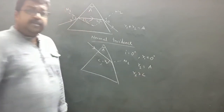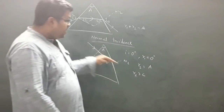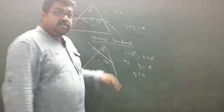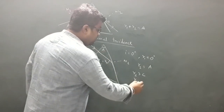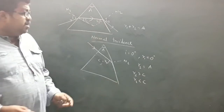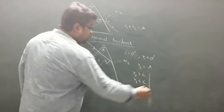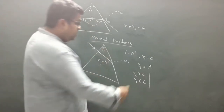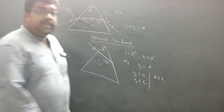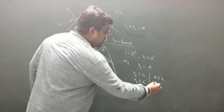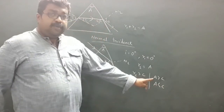The ray will emerge from the second refracting surface if r2 is less than C. But since r2 equals A, this implies the ray will undergo total internal reflection if A is greater than C, and it will emerge from the second refracting surface if A is less than C. So A greater than C is the condition for no emergence, and A less than C is the condition for emergence.